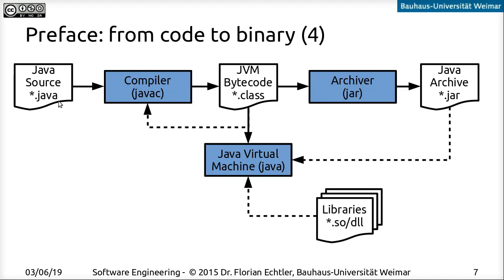For Java we start with our source code and run JavaC, the compiler, which produces class files containing the bytecode. Optionally, we can pack those into an archive using the jar tool, which bundles class files together into what is essentially a zip file with a different extension and specific internal structure. Both jar files and class files containing bytecode can then be loaded into the virtual machine, which internally handles translation to machine code. If your Java code requires system libraries, the JVM also takes care of loading these into memory.